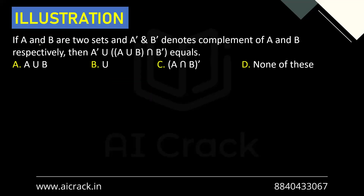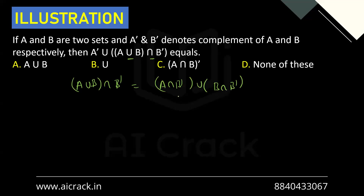Now let's look at this question: If A and B are two sets and A dash and B dash denote complements of A and B respectively, then A dash union (A union B) intersection B dash equals what? These are the types of questions you can expect in PGDBA. Let's solve using properties. We can see an operator change — union and intersection — so we'll use the distributive property. We have A union B intersection B dash. The intersection distributes, giving (A intersection B dash) union (B intersection B dash).